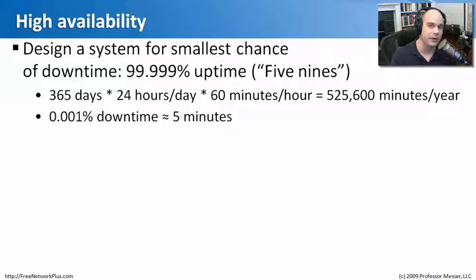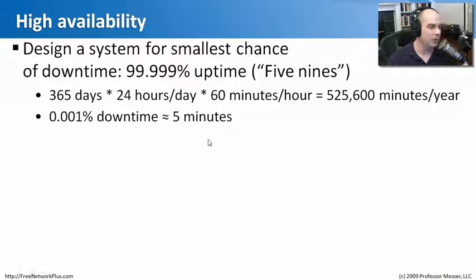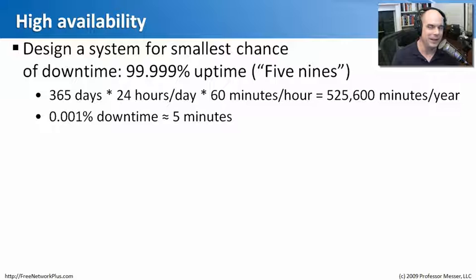You'll hear the industry say a particular technology has five nines of reliability, referring to the five nines in 99.999% uptime. If we take an entire year — 365 days, 24 hours a day, 60 minutes per hour — that's 525,600 minutes per year of 100% uptime. So 0.001% of that is about five minutes of downtime. That means the device is essentially designed to never go down, staying up all but five minutes or less in an entire year.